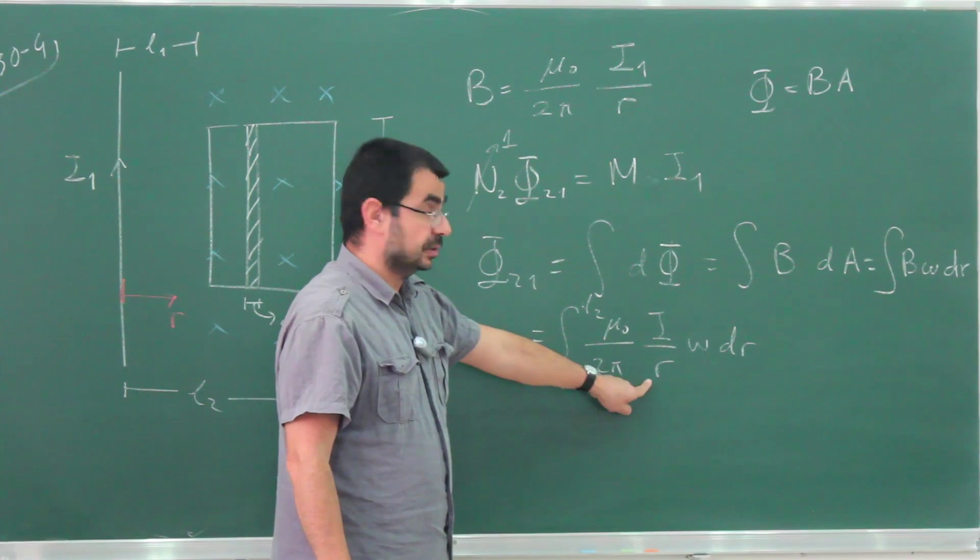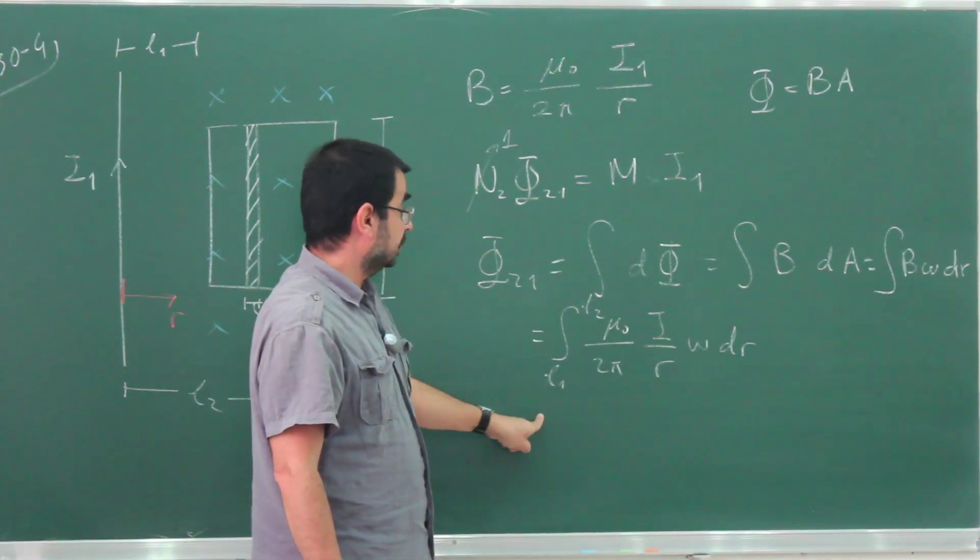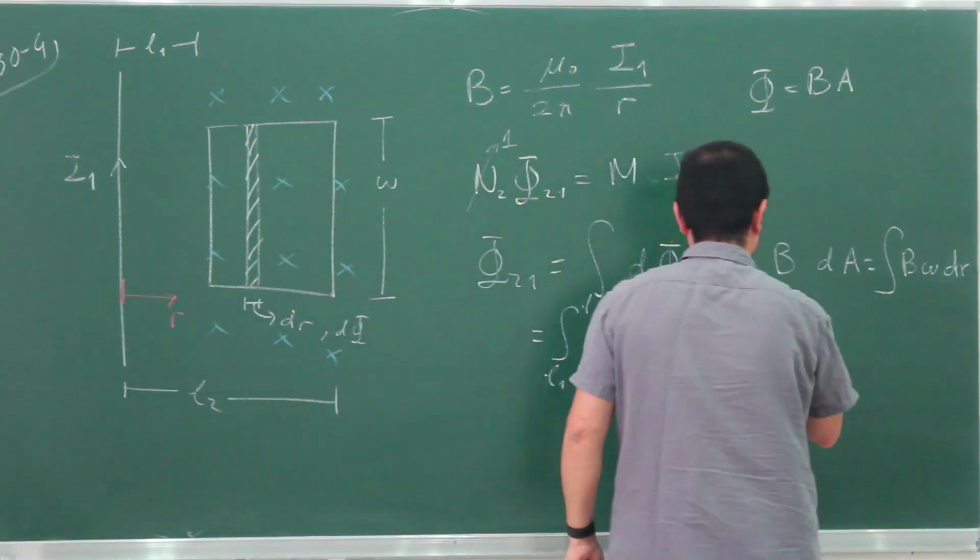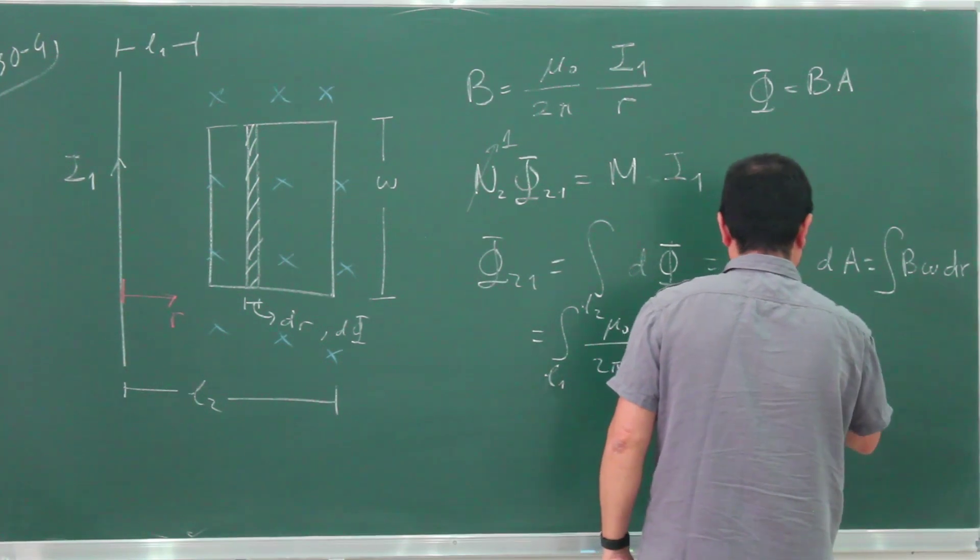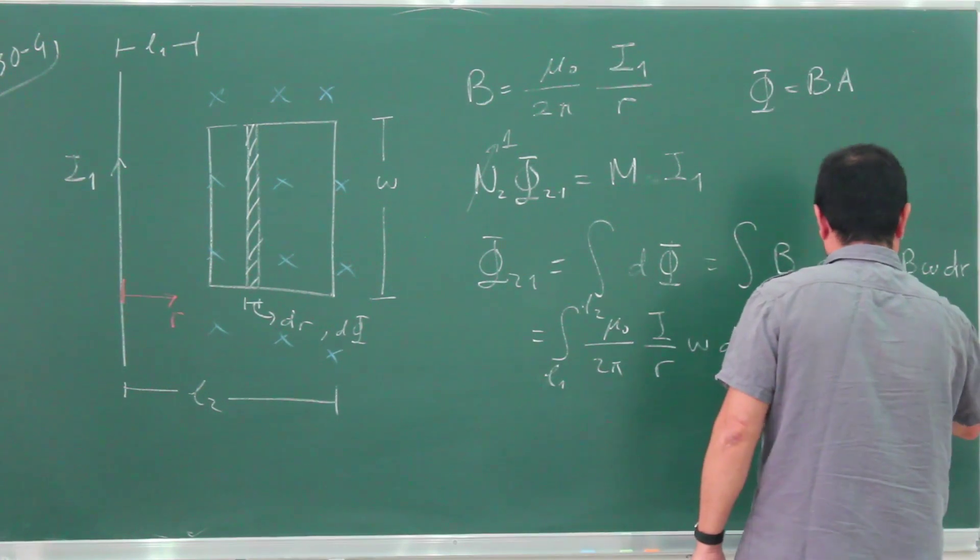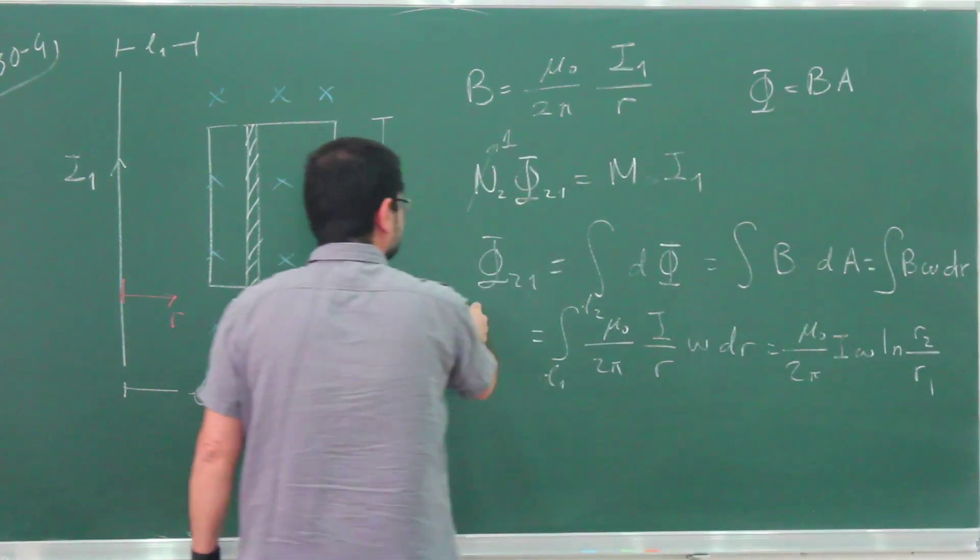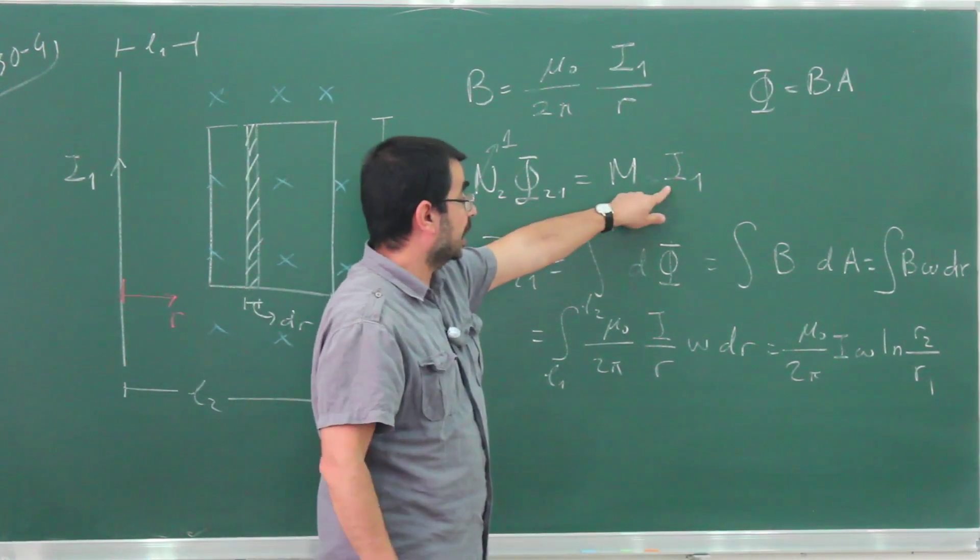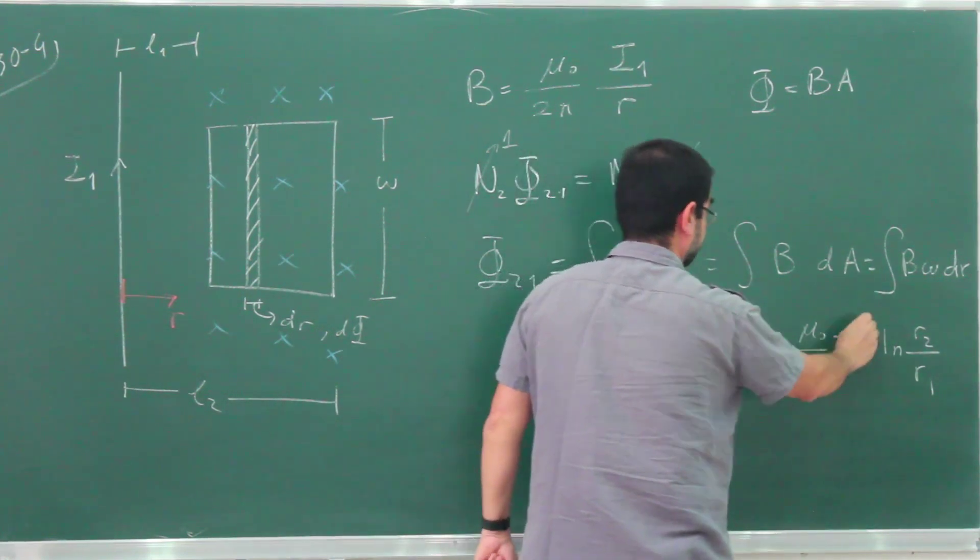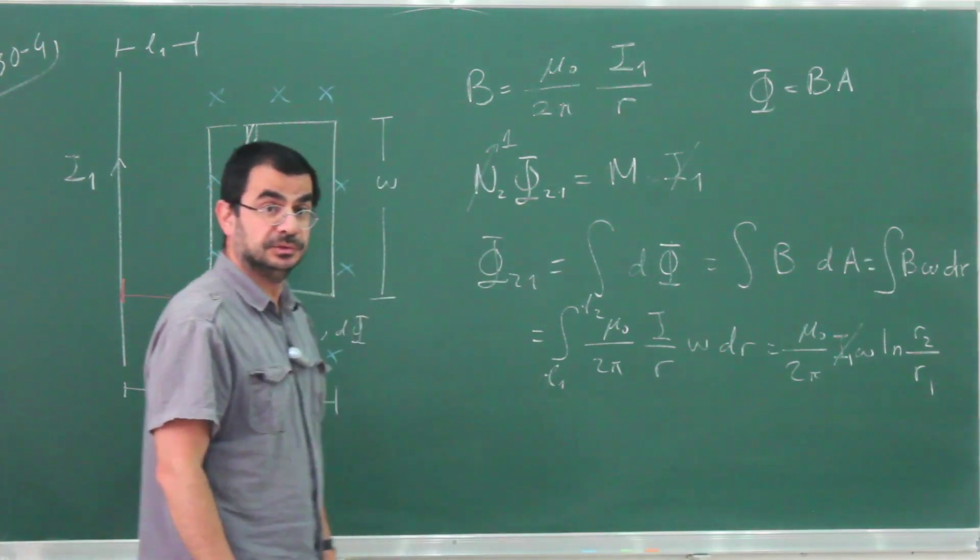The integral of 1/r is the natural logarithm of r. This comes down to a difference of logarithms, and the difference of logarithms equals the logarithm of a ratio. So I can write down the answer: μ₀/2π times i1·W·ln(L2/L1). This equals M times i1, so the i1 cancels, and the remaining expression is our mutual inductance: M equals μ₀W/2π·ln(L2/L1).